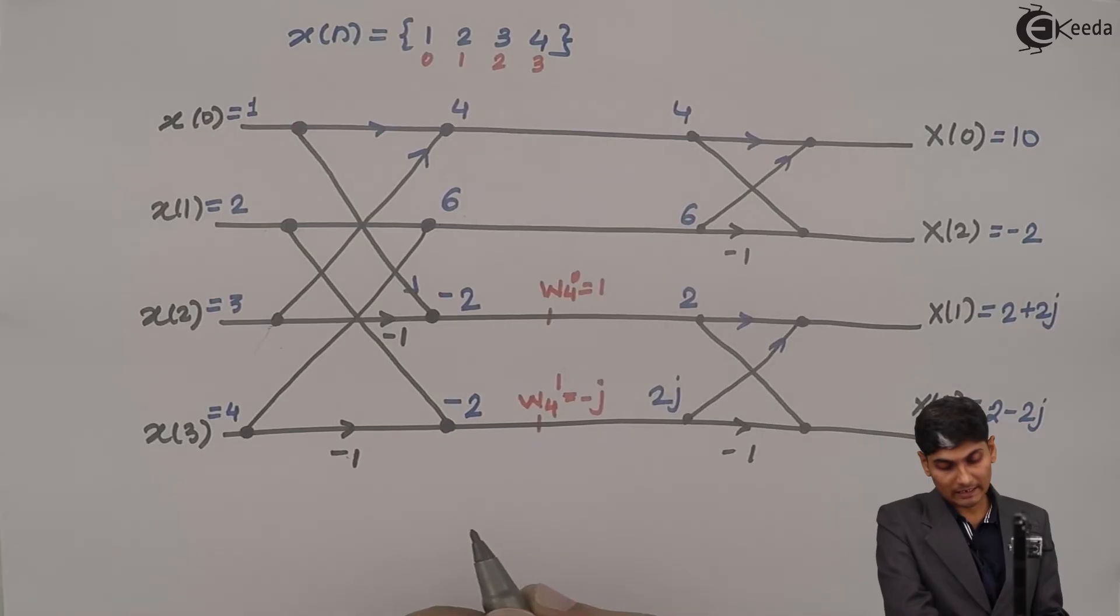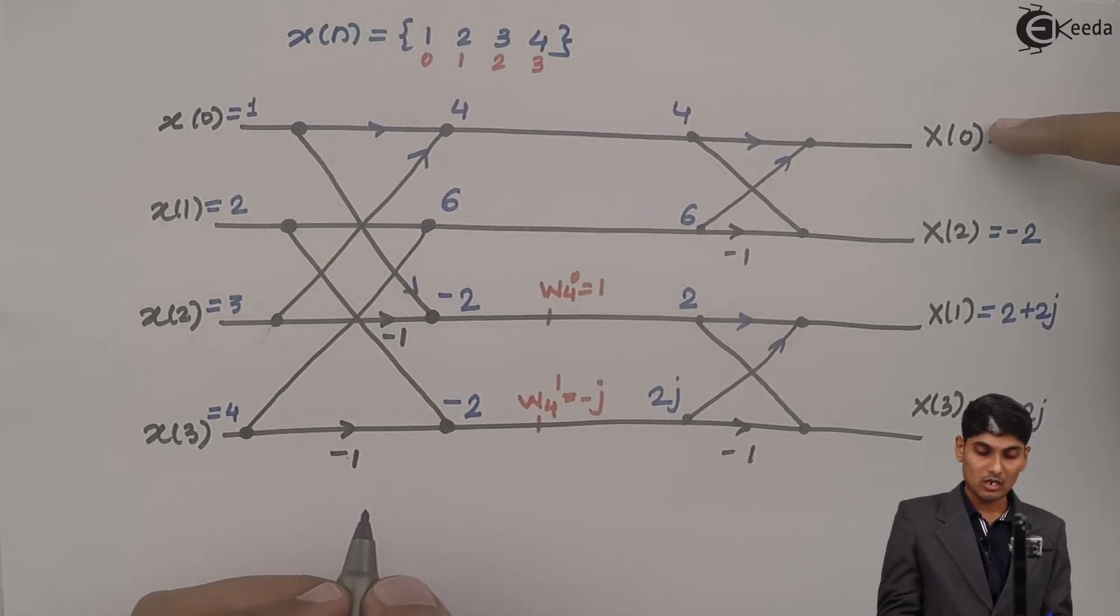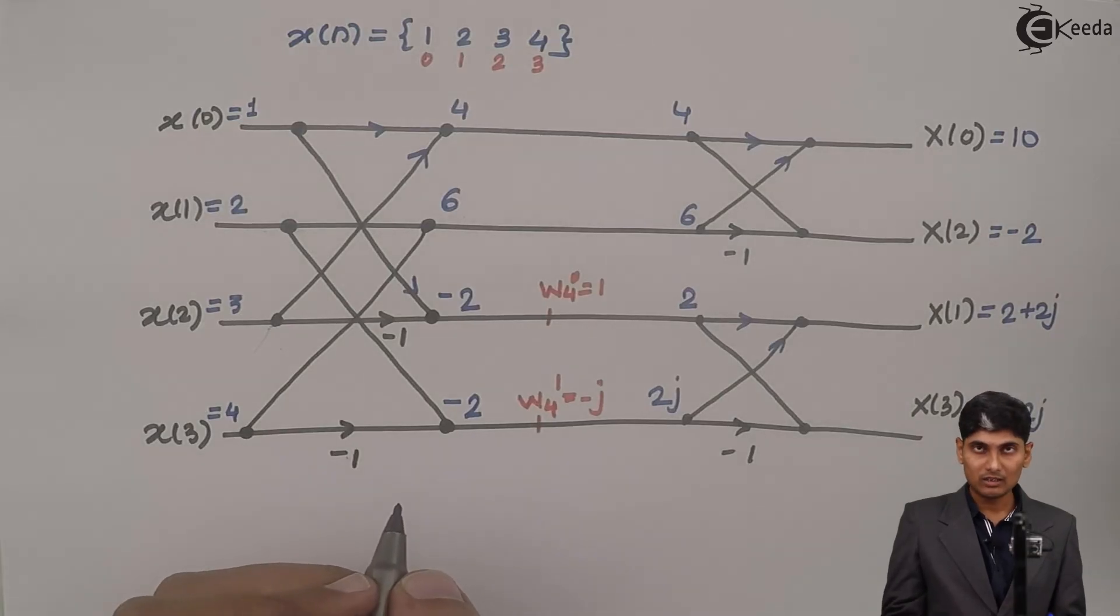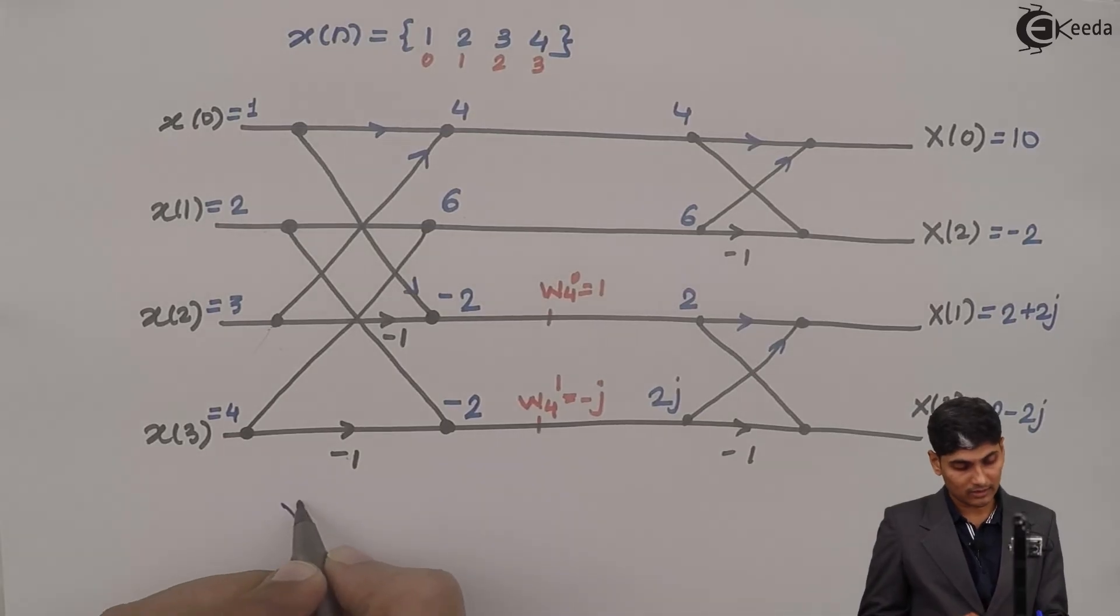So now when I write x of k, you see that this is x of 0 but the value of k is 2. Then we have k is 1 and k is 3. So we need to rearrange the sequence.